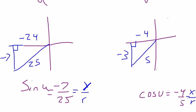So the cosine of u is negative 24 25ths. The sine of v is negative 3 5ths.